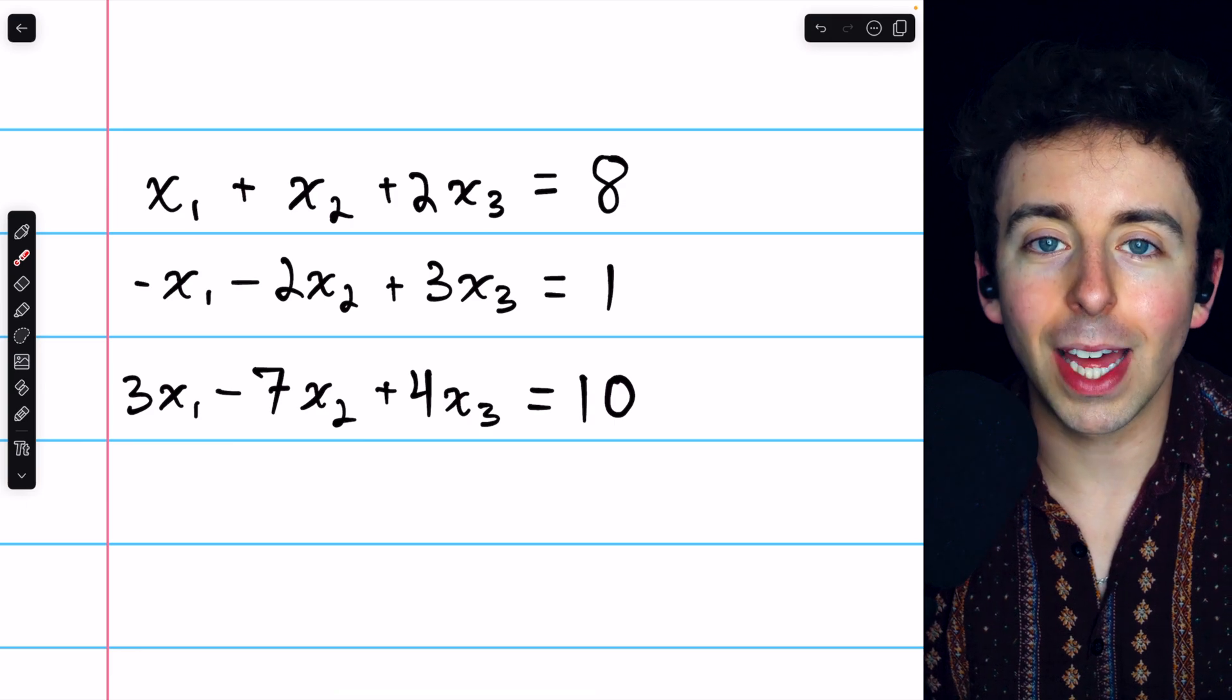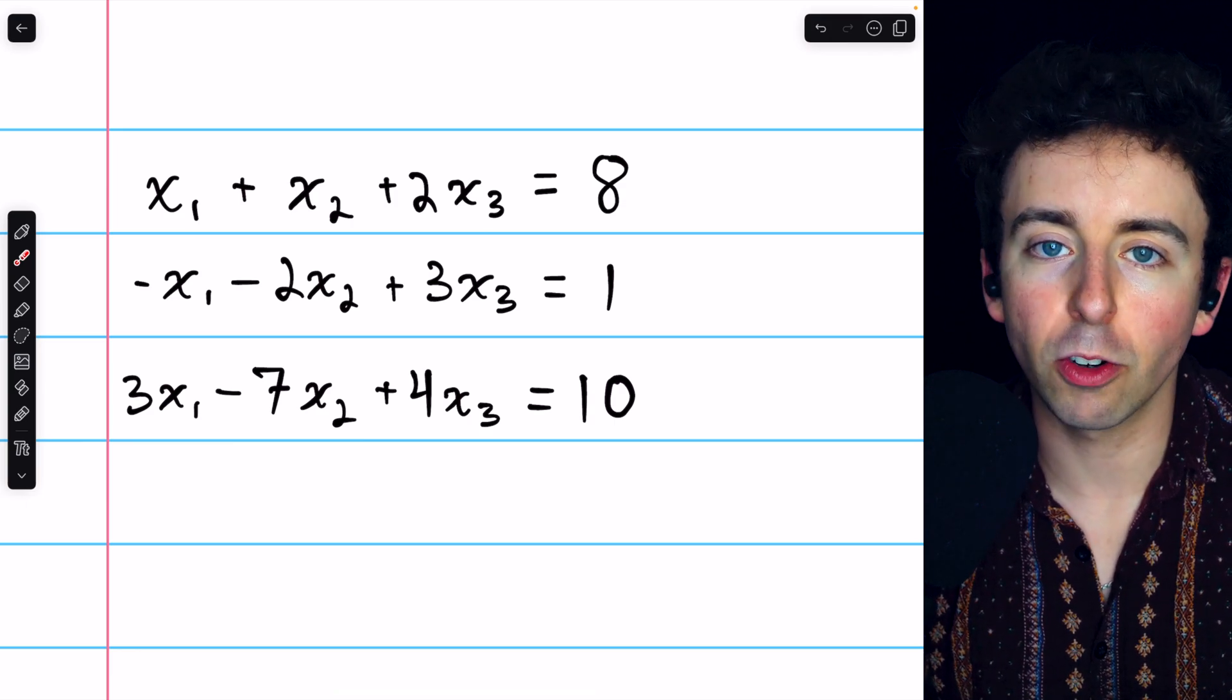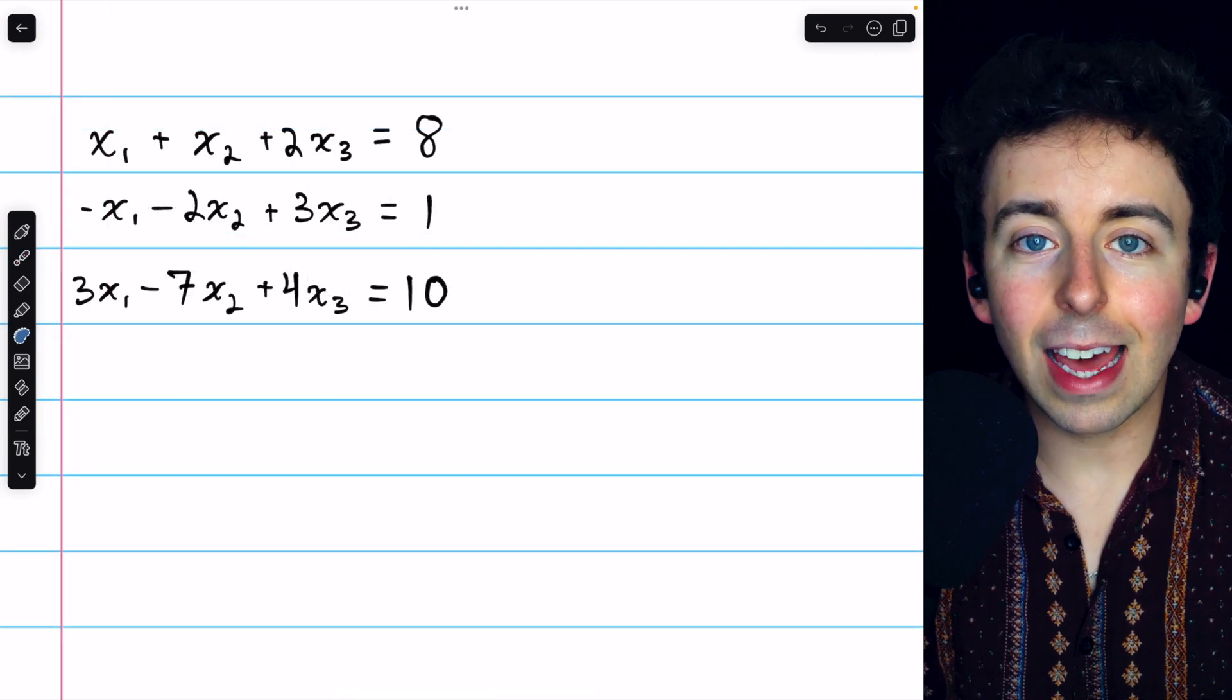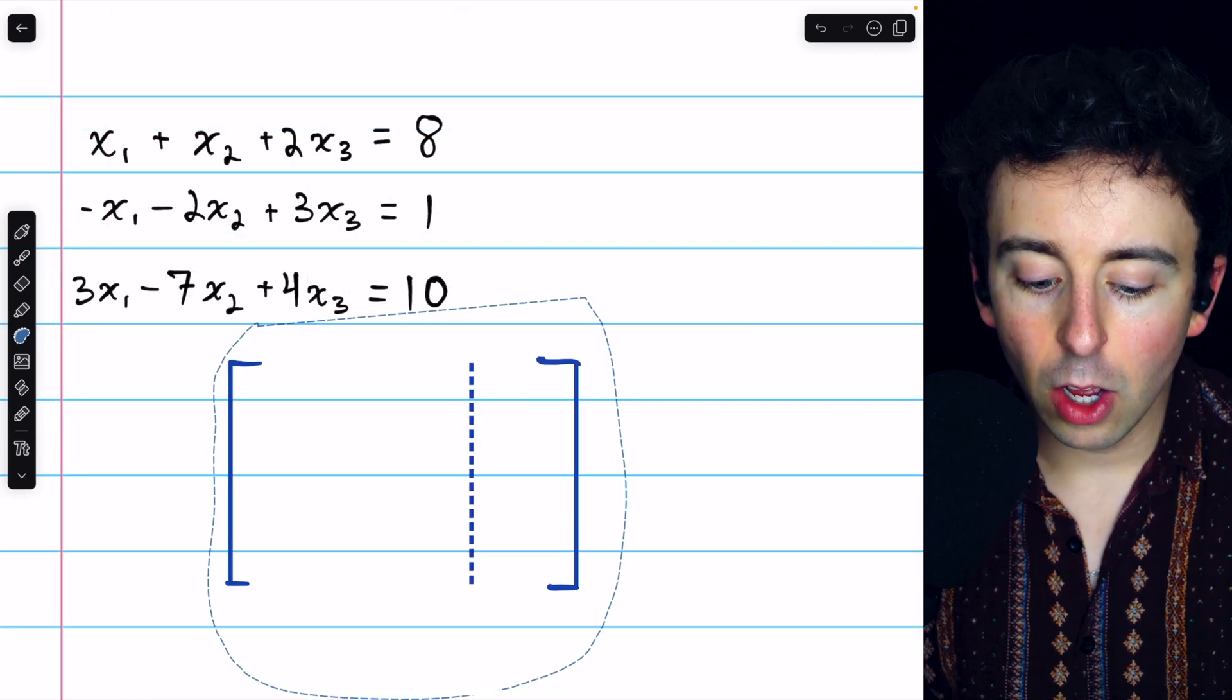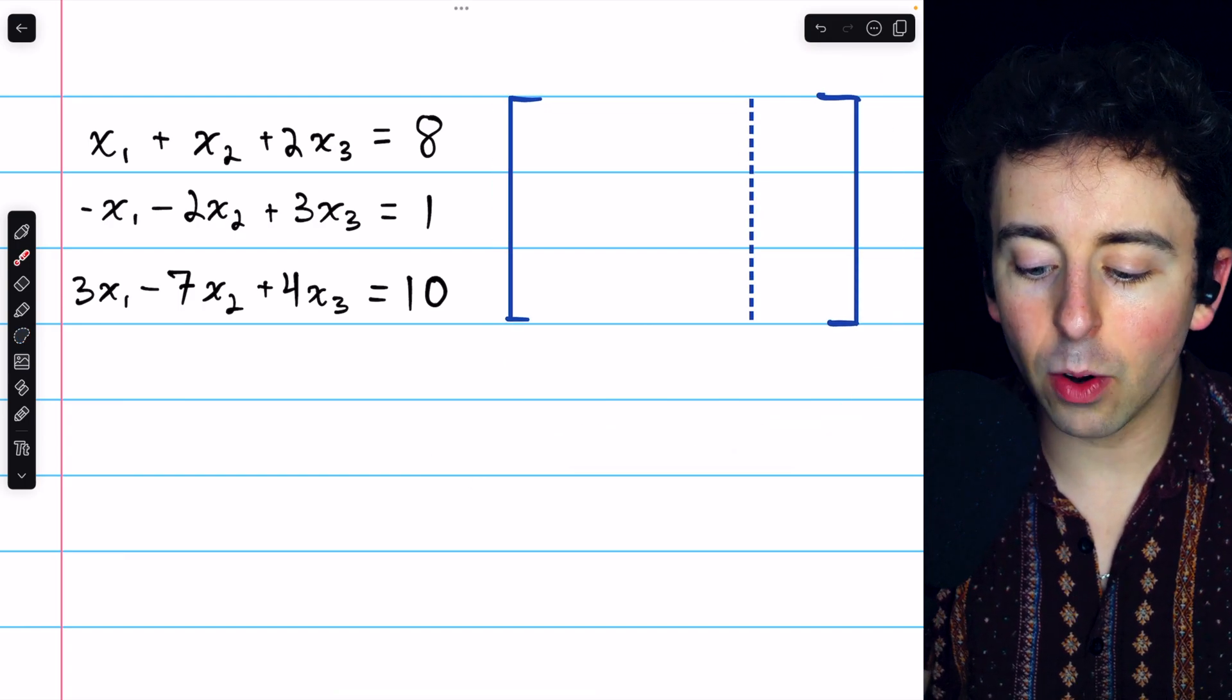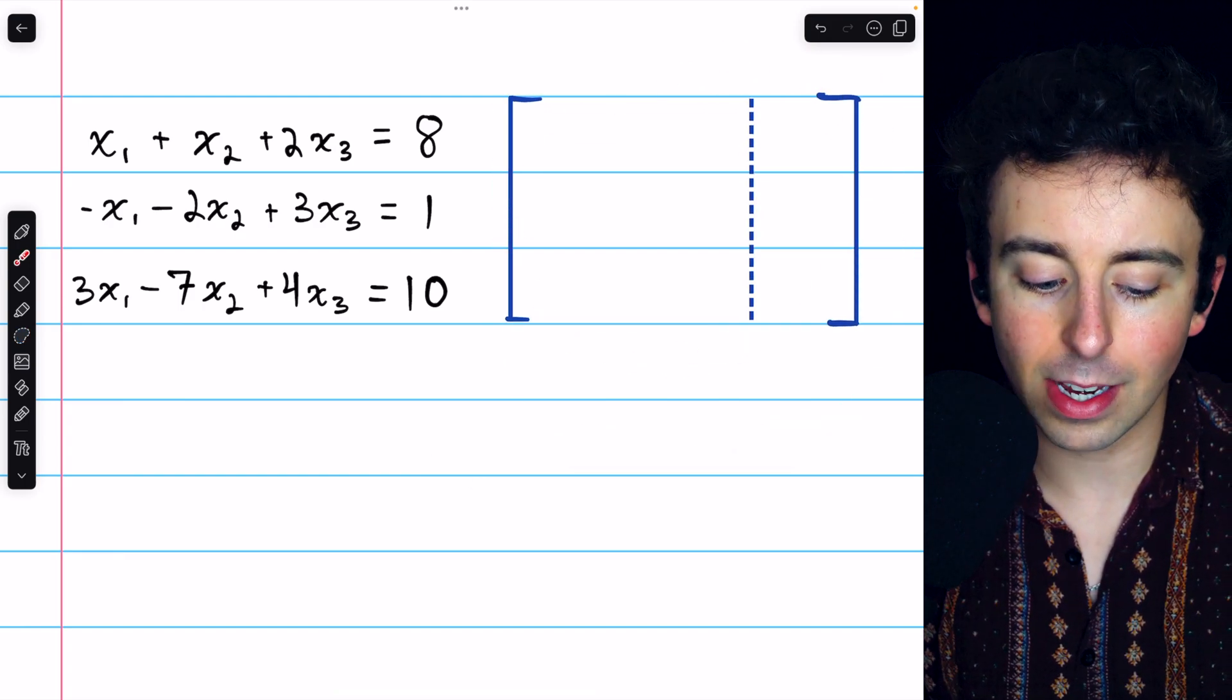I'll leave a link in the description to my lesson giving a more formal introduction to Gaussian elimination, if you're interested. In order to use elementary row operations to solve this system, we need to represent the system with a matrix. For that, we use what's called an augmented matrix.